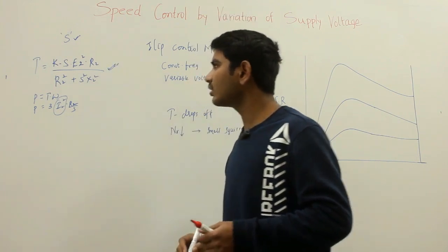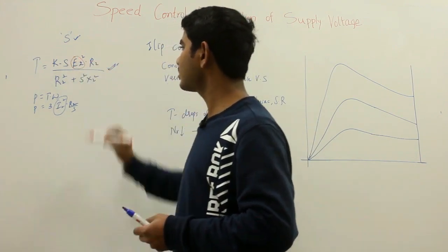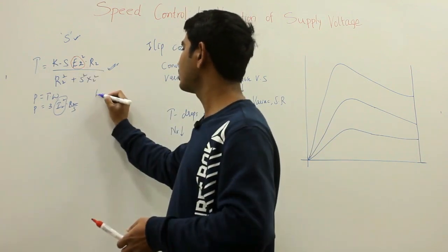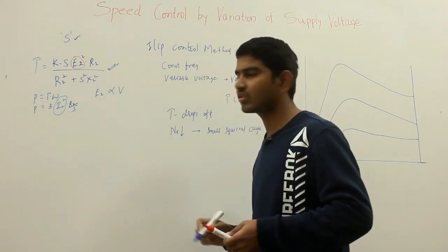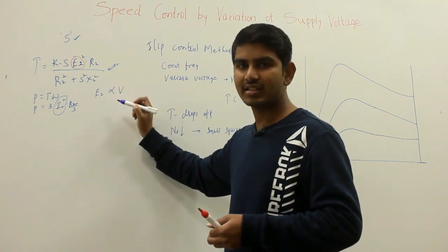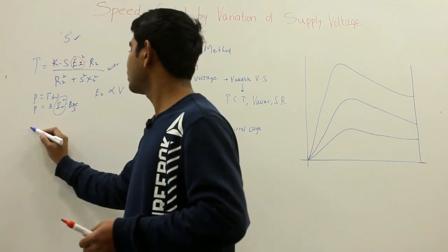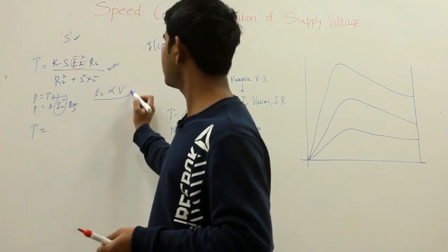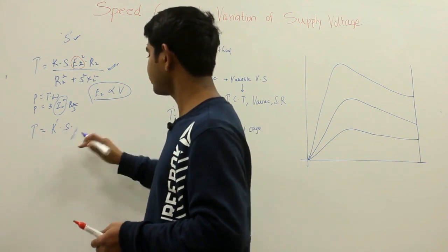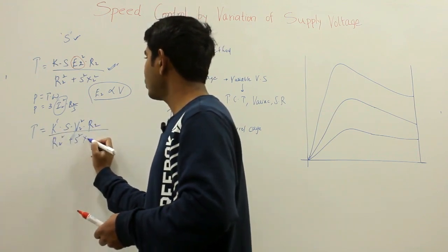At standstill, the EMF induced in the rotor E2 can be approximated as proportional to the supply voltage, since the rotor is initially at standstill when the EMF gets induced. So your torque will be equal to K' · S · V² · R2 / (R2² + S²·X2²), where we substitute E2 proportional to V, giving a new constant K'.